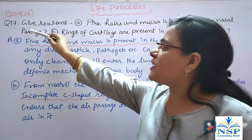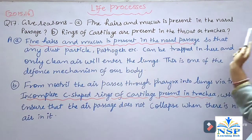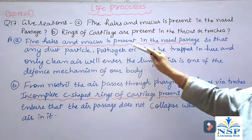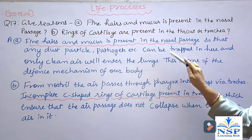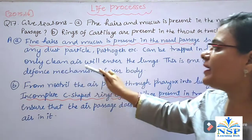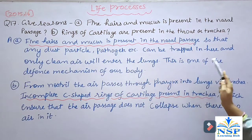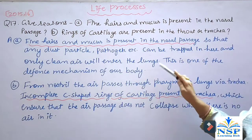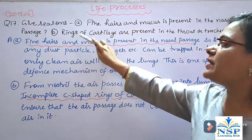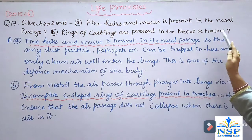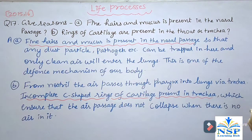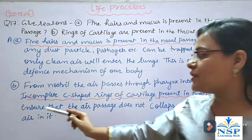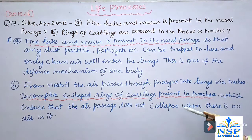Give reasons: A. Fine hair and mucus are present in the nasal passages so that dust particles and pathogens can be trapped there, and only clean air enters the lungs — this is a defense mechanism of our body. B. Rings of cartilage are present in the trachea: from the nostril, air passes through the pharynx to the lungs via the trachea. Incomplete C-shaped rings of cartilage in the trachea ensure that the air passage does not collapse when there is no air in it.